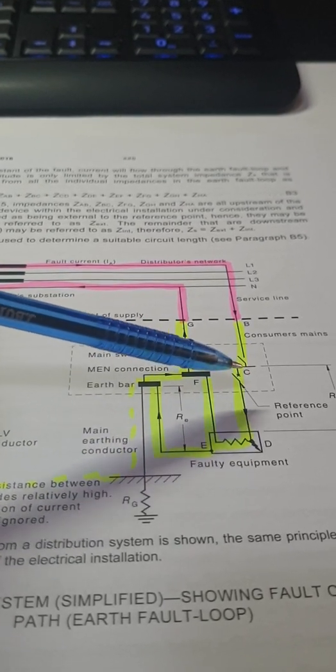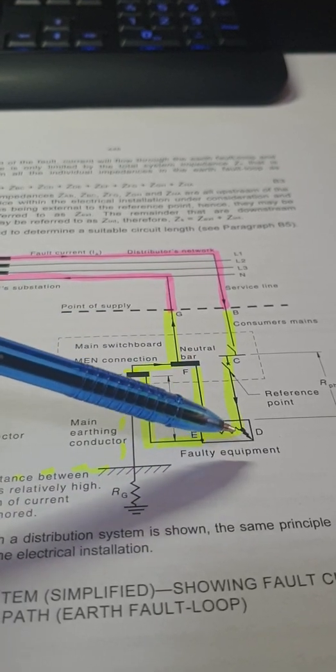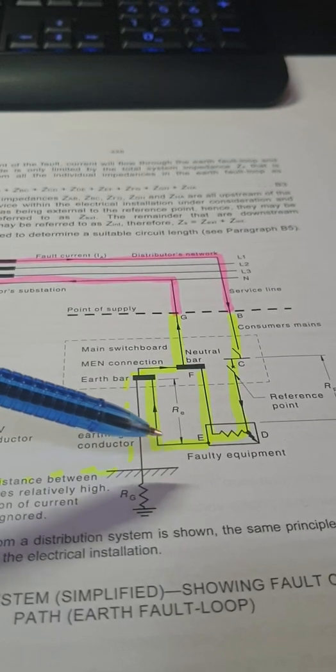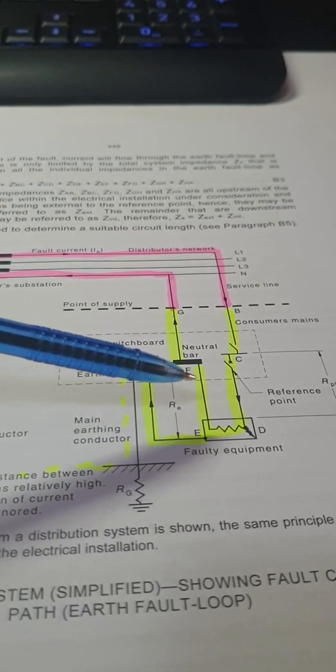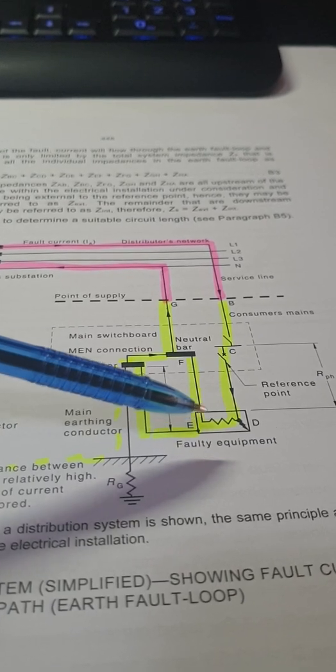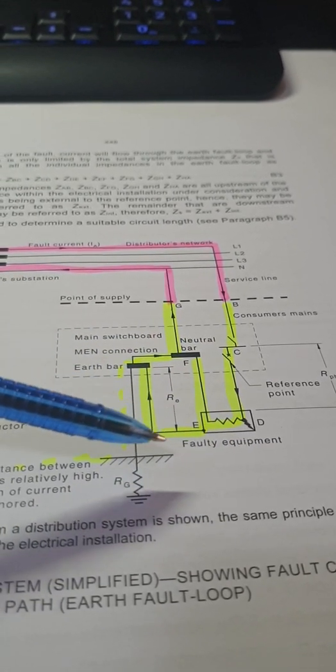When we get to this point here at the main switch, we then take it down through the sub circuit to the appliance. The faulty appliance. We then come back via the earth. This part here, which is a neutral, doesn't come into the fault.